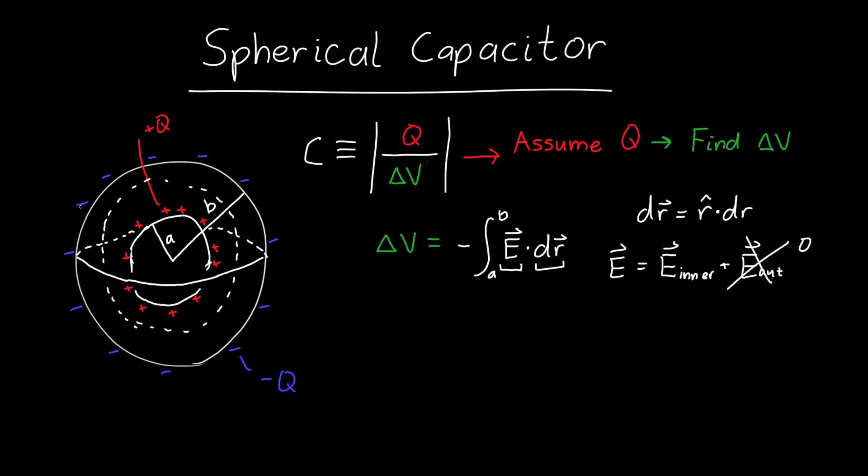the enclosed charge is only the enclosed charge of the inner sphere. We don't capture any charge from the outer sphere. So the electric field due to all the negative charge on the outside is zero. We only have to worry about the charge on the inside.